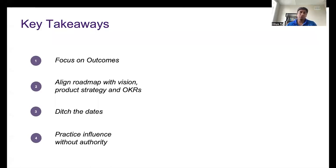Before we go, two key takeaways, which we have already discussed: focus on outcomes, align your roadmap with the vision, product strategy, and your OKRs. Ditch the dates, the timelines, because once you talk about dates, it's a different kind of commitment. You go into a different rabbit hole. And then practice influence without authority. Influencing without authority involves understanding and empathizing with different kind of people, different people in your teams, different kind of stakeholders. And then you build trust with them.